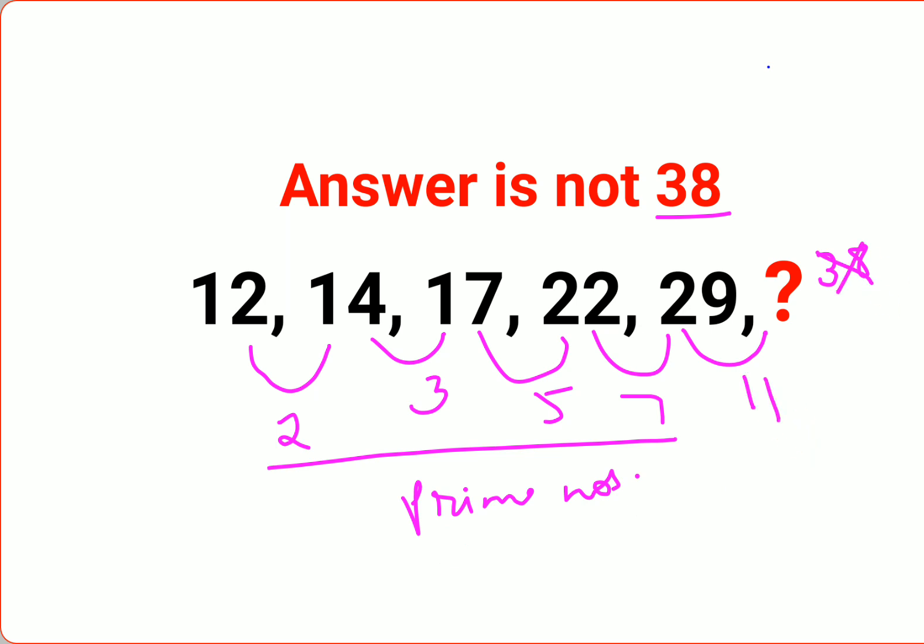Now the value for your question mark will be your 29 plus 11, that gets you 40. I hope this is very clear to everyone. Please understand, in order to solve these kinds of questions you need to have a very clear understanding of prime numbers.